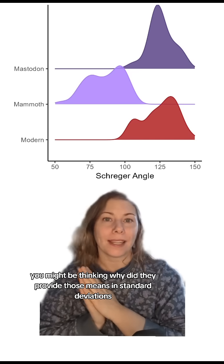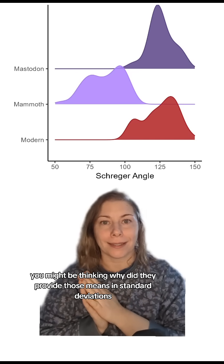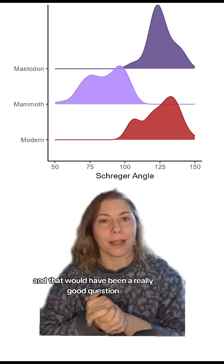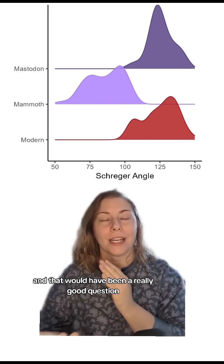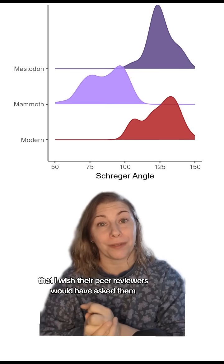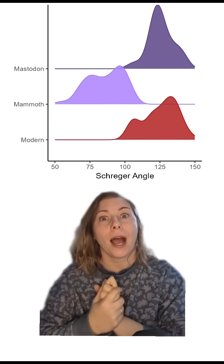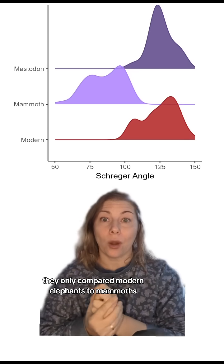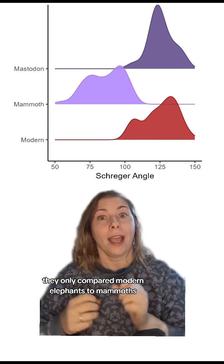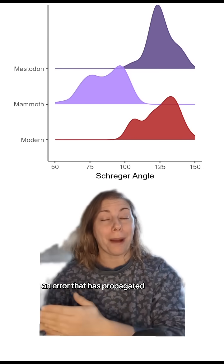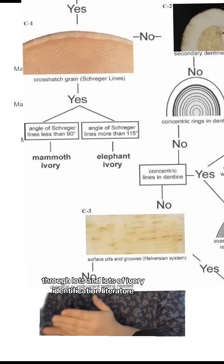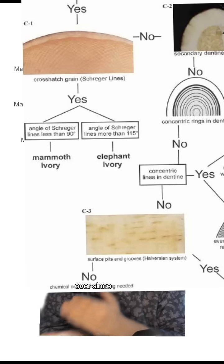Now you might be thinking: why did they provide those means and standard deviations if they didn't cross-compare them? That would have been a really good question that I wish their peer reviewers would have asked. But instead, they only compared modern elephants to mammoths — an error that has propagated through lots and lots of ivory identification literature ever since.